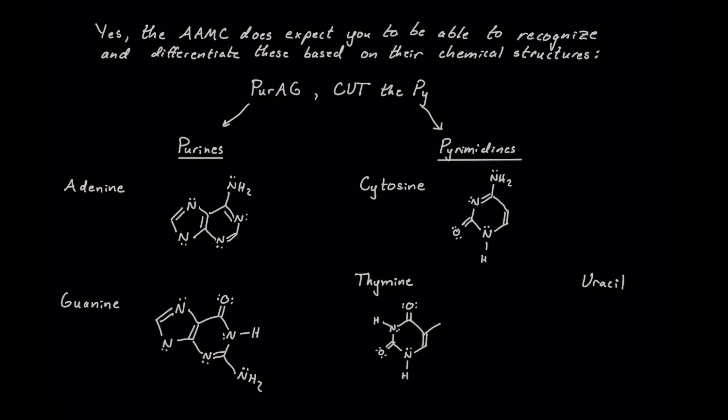To get to the task at hand, it's a good idea to chunk and organize these nitrogenous bases into their different classifications. First, we'll look at the purines — our mnemonic is 'pure AG' or 'pure gold,' since AG is the abbreviation for gold on the periodic table. Then we have 'CUT the Py,' where Py stands for pyrimidines, and CUT represents cytosine, uracil, and thymine.